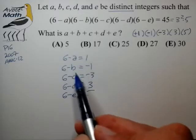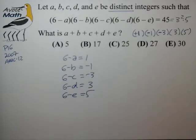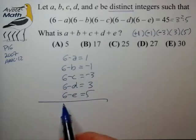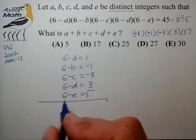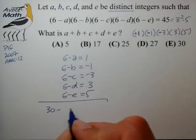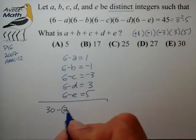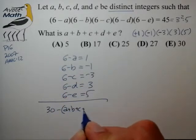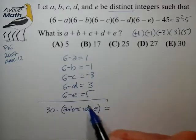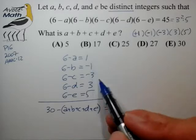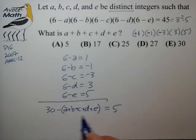At this point you could actually solve for a, b, c, d individually and add them up. You may notice there's kind of a shortcut here where we could just add up these equations. So 5 times 6 is 30 minus the sum a plus b plus c plus d plus e equals the sum of the numbers on the right side. The 1s cancel, 3s cancel, you're left with 5.